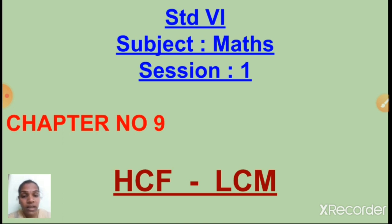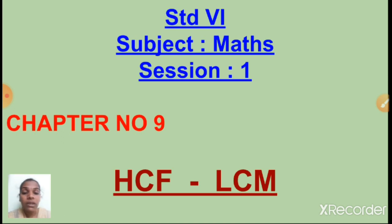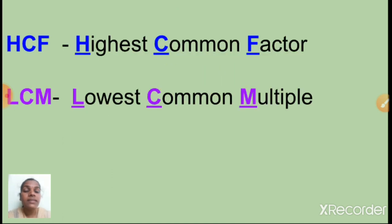Before that I would like to ask one thing: how many of you know the tables very well? Good. If you have any doubt in the tables, you have to study, children, because if you know the tables then only this lesson will be easy for you. HCF means Highest Common Factor and LCM means Lowest Common Multiple.